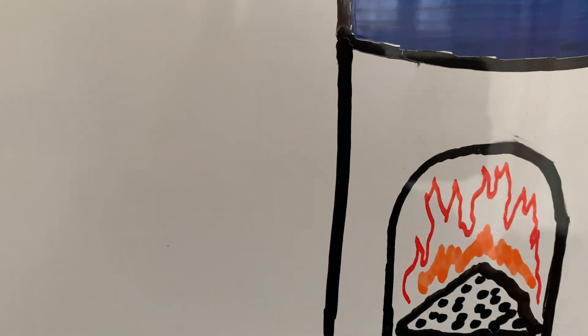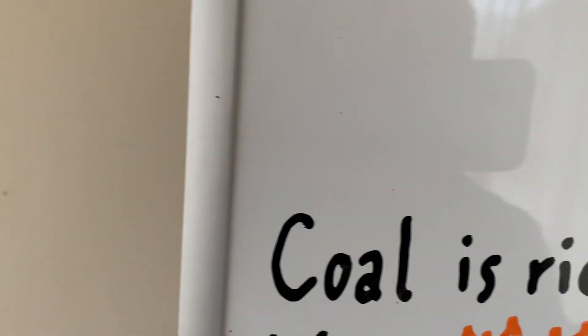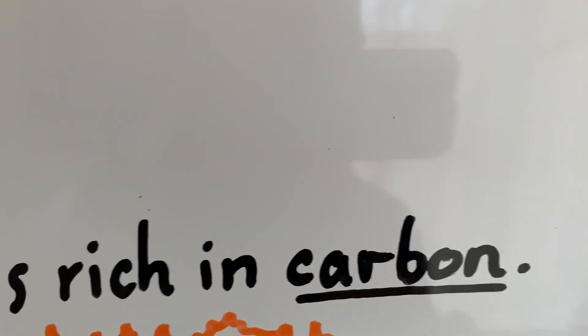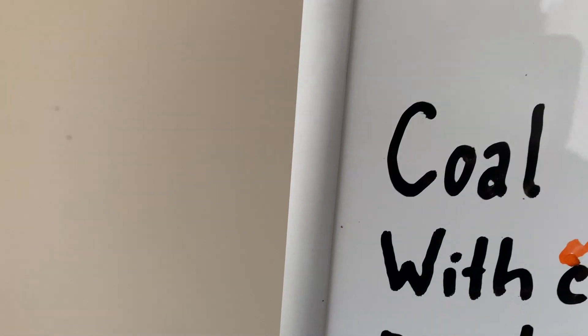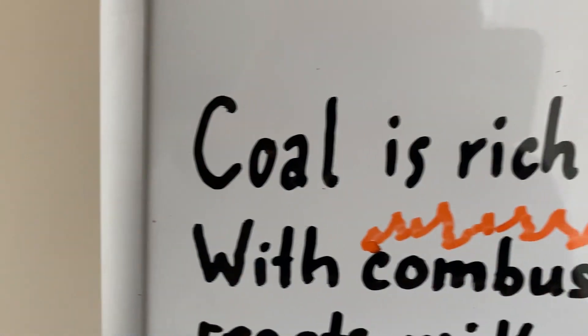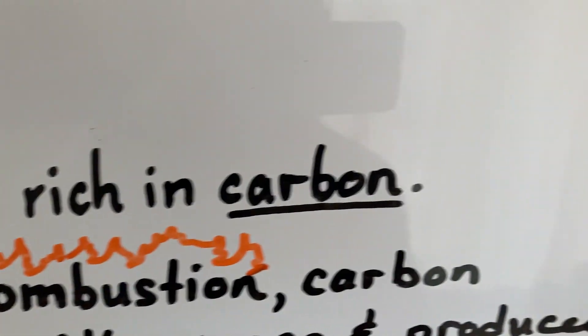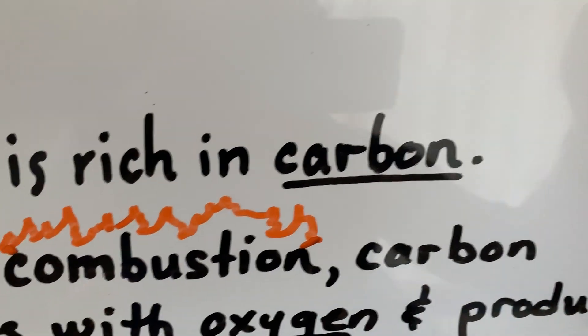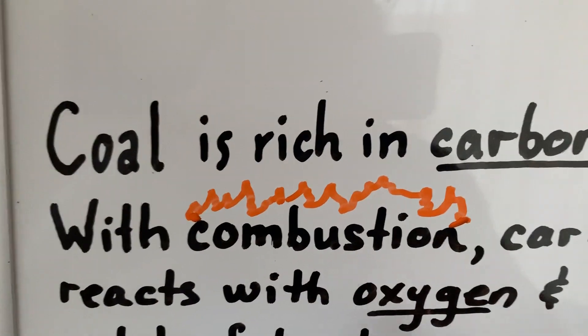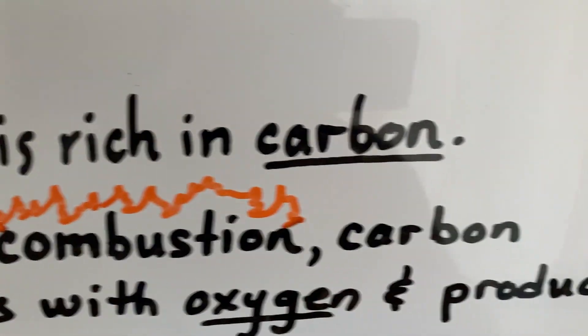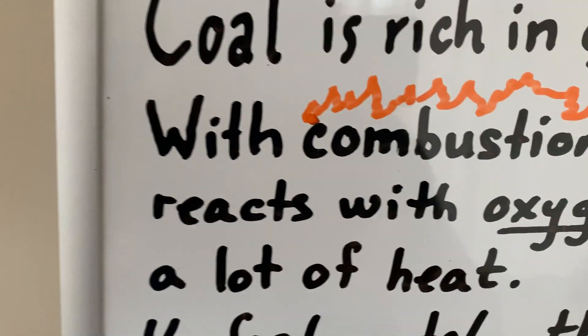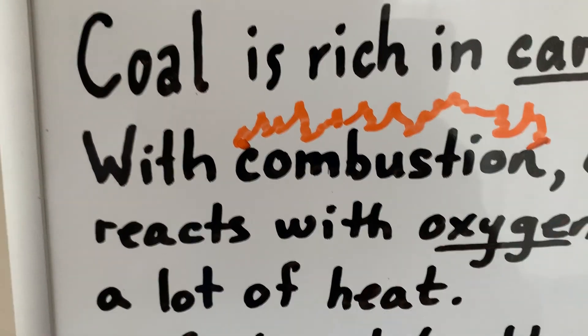However there is the unfortunate problem we have to deal with when we think about what happens when we burn coal. So as you know, coal is rich in carbon. And when we burn something that's rich in carbon, whether it's coal or a piece of wood, it's gonna combust, it's gonna go through the process of combustion. And that just means that the carbon is reacting with oxygen in the air and that's producing a lot of energy in the form of heat.